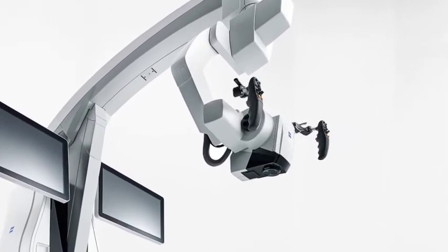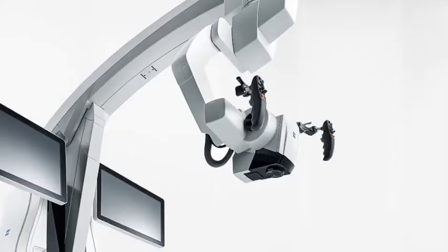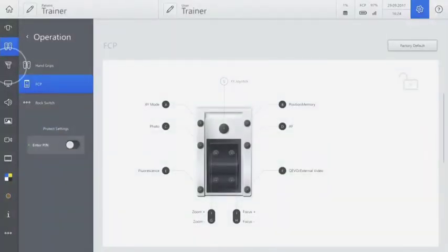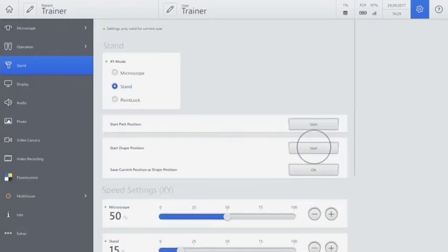To position ZEISS Kinevo 900 in its pre-configured drape position, go to Settings, go to Stand, and press Start Drape Position.